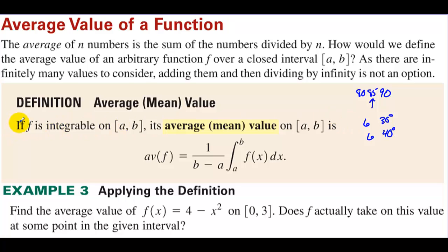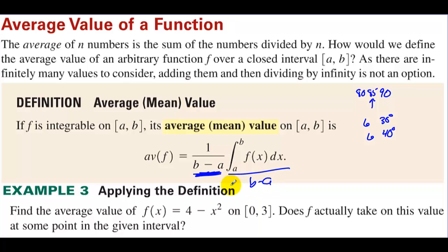That's where calculus comes in. If f is integrable on [a, b], its average or mean value on [a, b] is: we take the integral of the function and multiply by 1 over (b minus a). In other words, we divide by (b minus a). We're adding up an infinite amount of values, and that's why we need calculus — to add up an infinite amount of things and get an answer that's not infinity.